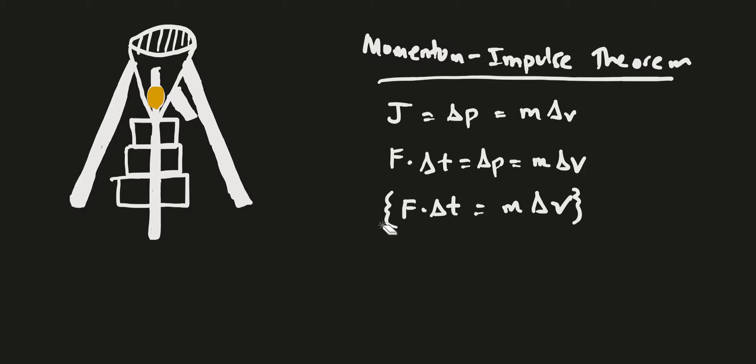So how can the momentum impulse theorem explain the egg drop? Well, let's expand what delta v is. This is just m times v final minus v initial. This is just an expansion.